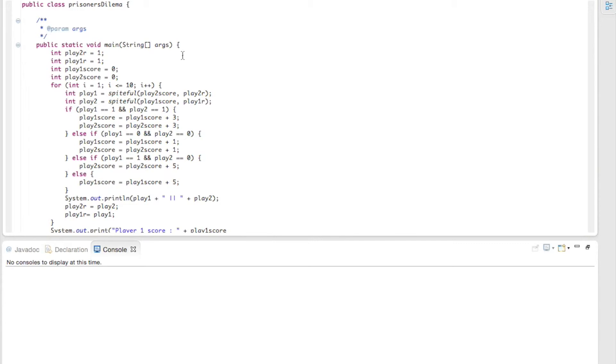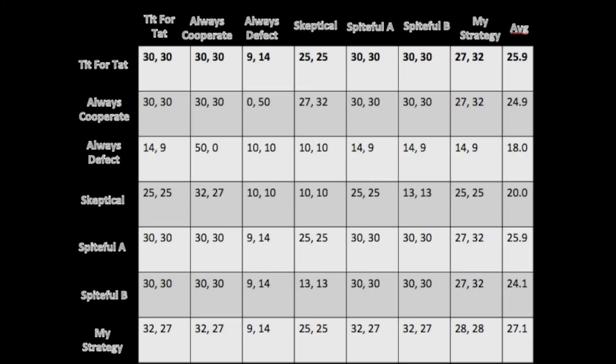I then ran my strategy ten times against all the other strategies — making a total of seven — and tabulated those results along with the rest. As you can see, my strategy seemed to do well against all the other ones. I even averaged out a score for each strategy per round against all the other strategies. Tit for tat and spiteful A seemed to tie, which makes sense given that they both reward players for cooperating and punish players for defecting. My strategy, however, beat tit for tat by two points.